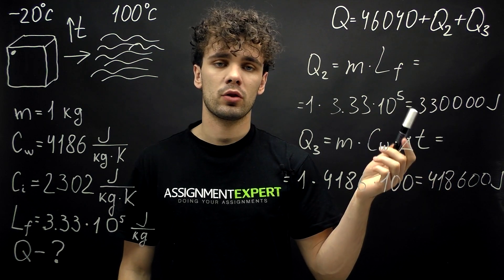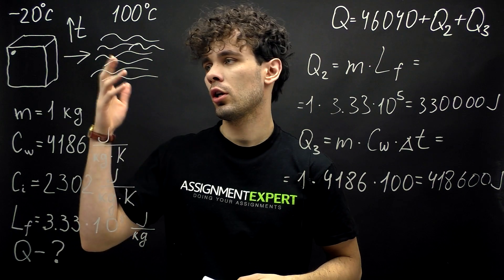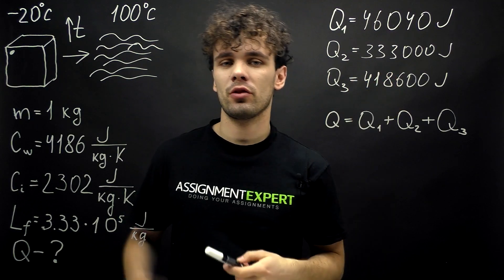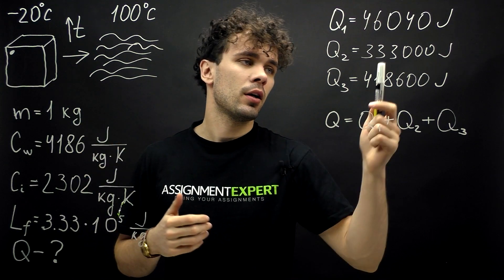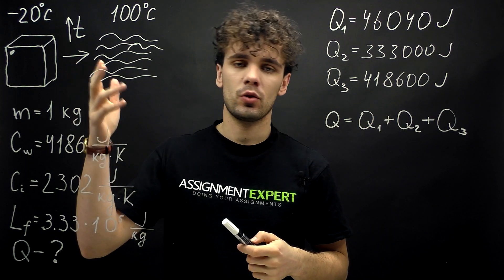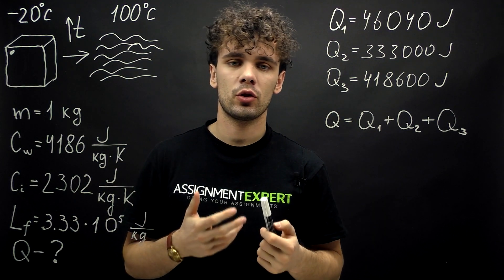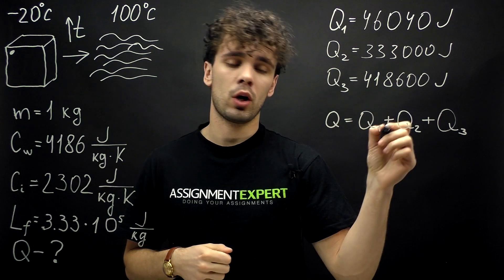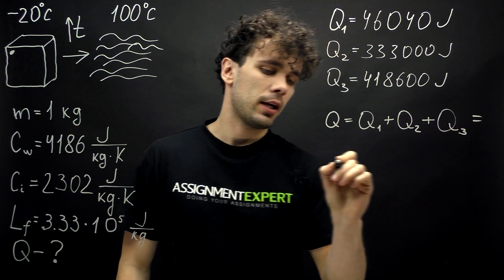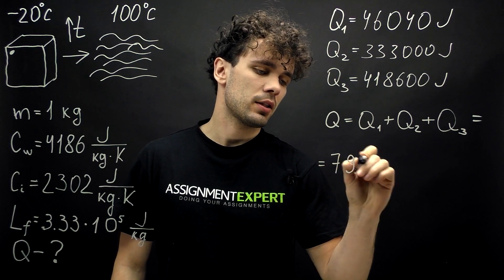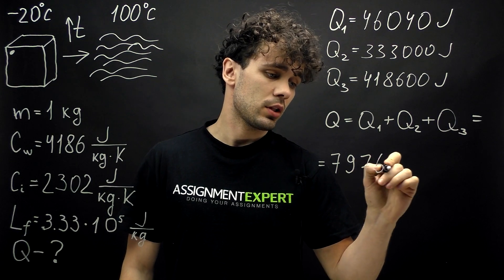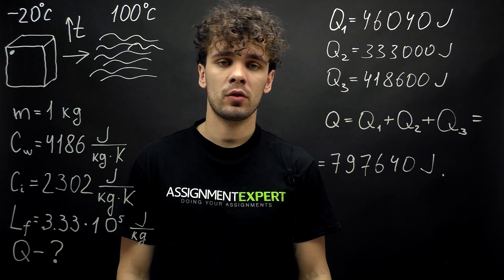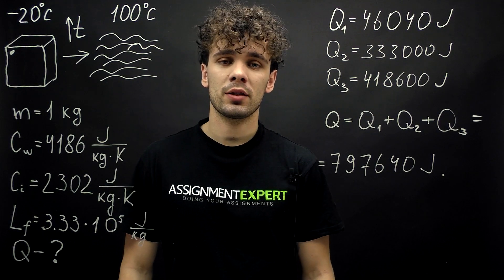Now we have all three amounts of heat needed to find the total amount of heat to change from ice at negative 20 degrees to water at 100 degrees. We found Q1: the heat to change the temperature of ice from negative 20 to zero degrees Celsius. Q2: the heat to transform ice into water at zero degrees Celsius. And Q3: the heat to change the temperature of water from zero to 100 degrees Celsius. We just need to add them: Q equals Q1 plus Q2 plus Q3, and this gives us 797,640 Joules — the total amount of heat we were searching for. Thanks for watching, stay tuned for updates. Goodbye.